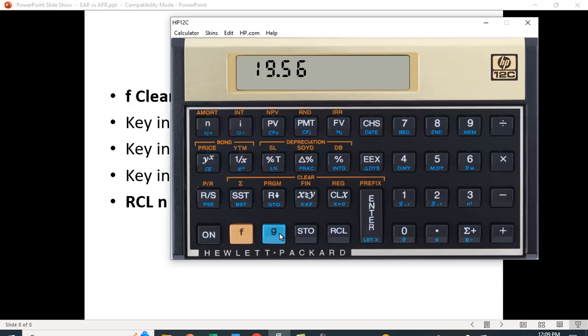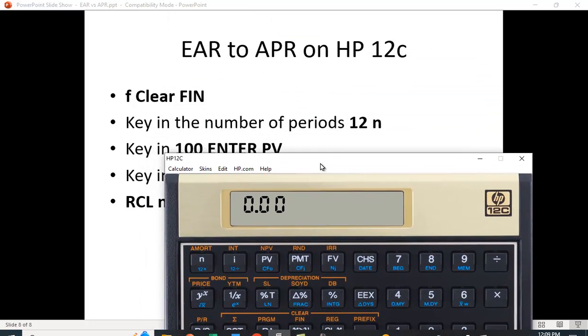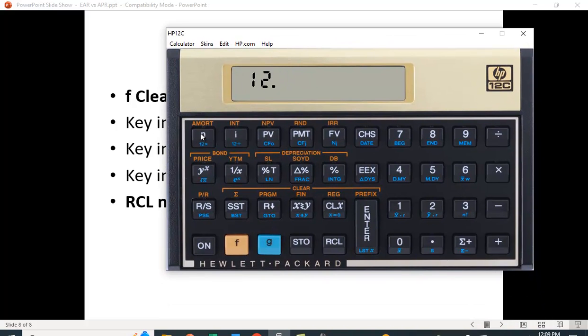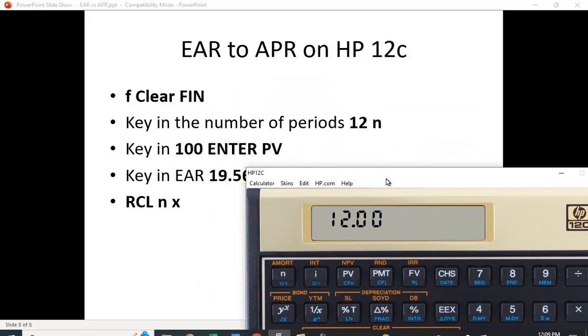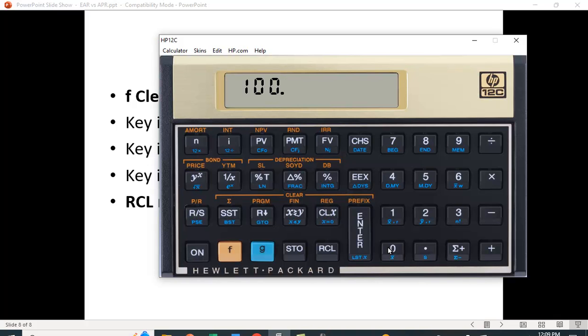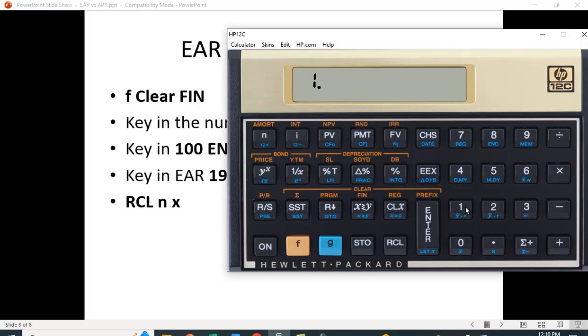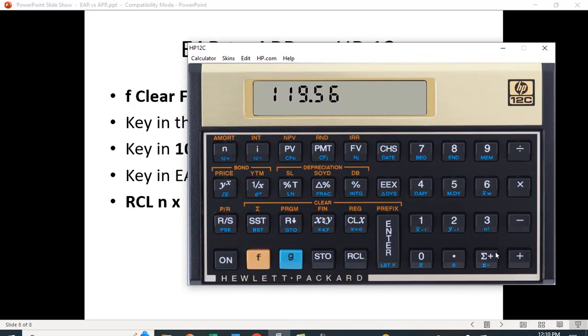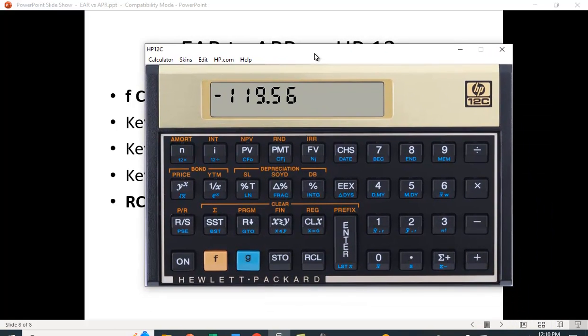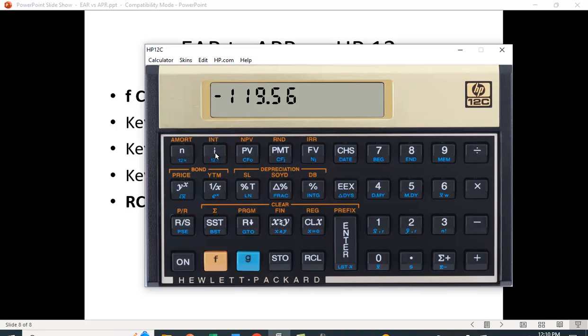Alright, so let's see if that actually works here. I'm going to clear my financial functions and then let's see what we can do here. 12 and N, so I'm going to put in 12, and that's the number of periods, and then 100 ENTER and PV, 100 ENTER PV. We key in the 19.56, the plus sign, change signs, FV I.